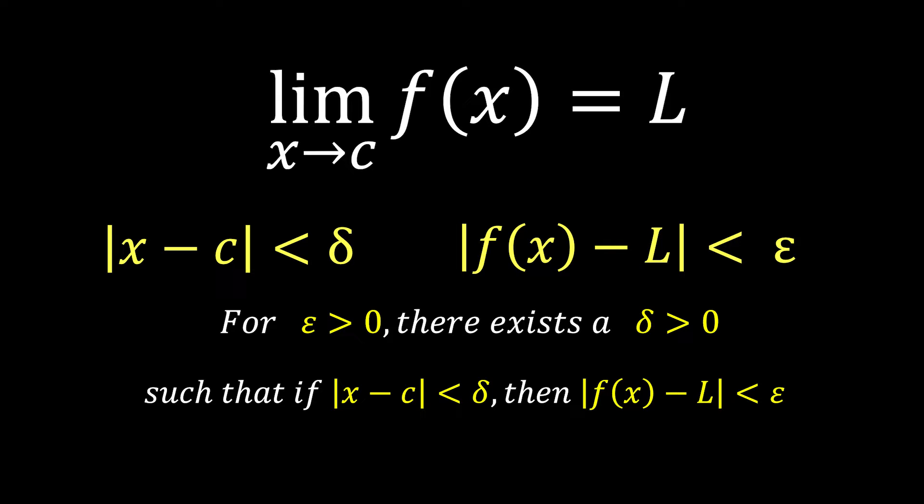However, it is challenging to define the limit with just this relationship because we don't know the relationship between δ and ε clearly yet. If we can find a δ that satisfies this for any ε, then the limit of the function as x approaches c exists. But how do you find this δ value? Let's explore this by looking at a graph.